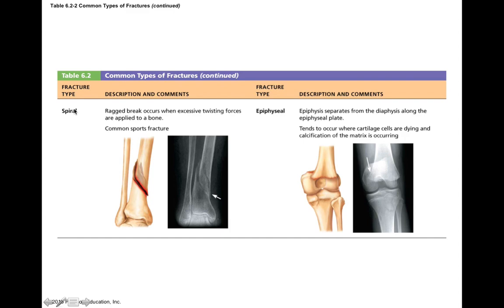Spiral fractures are those where the fracture spirals longitudinally around the bone. It's a common sports fracture due to twisting of a limb in a fall or when a limb gets trapped. It's a ragged break caused by excessive twisting forces applied to the bone, which is why the fracture spirals around the length of the bone.